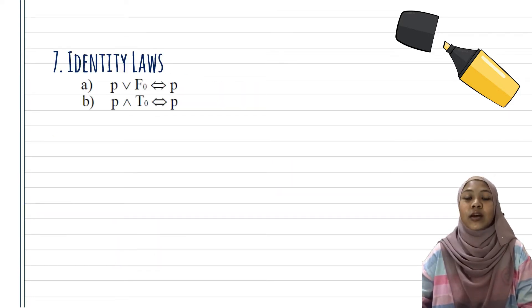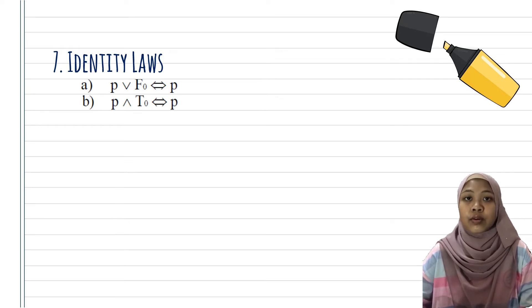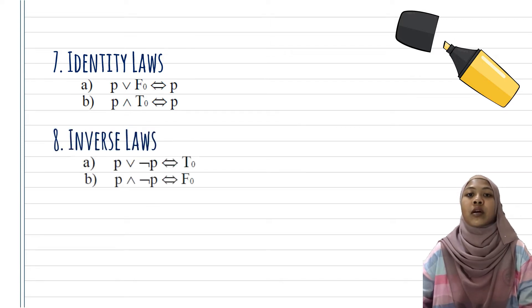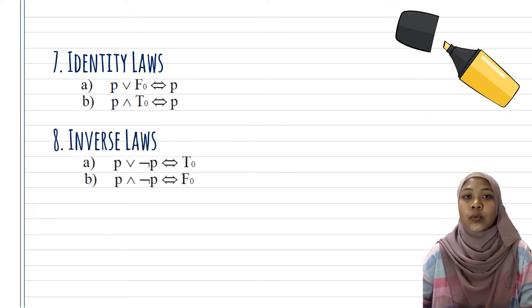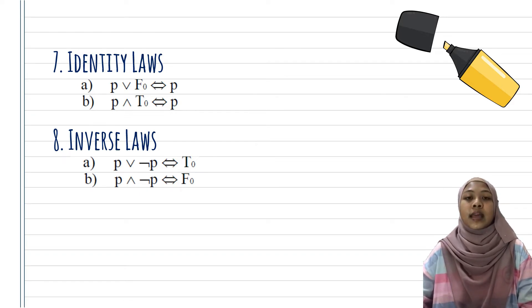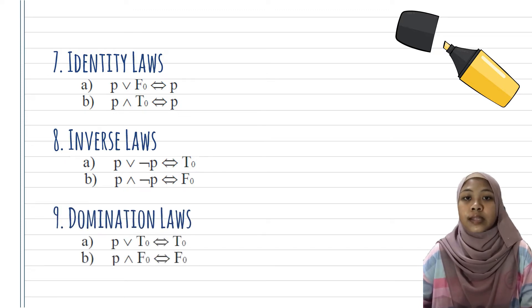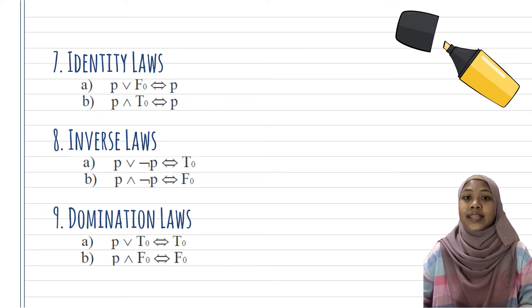We continue with the next law, Identity Laws, which is when P OR F (contradiction) will get P back, and also P AND T (tautology) will get P. Then Inverse Law, which is when P OR NOT P we will get T, and when P AND NOT P will get F. As for Domination Laws, P OR T will get T back, P AND F will get F back. Between these three laws, they look the same, so be careful to use them.